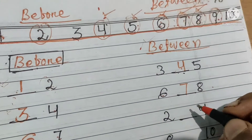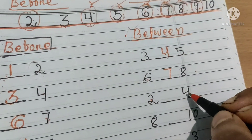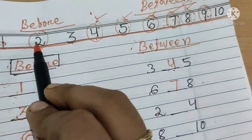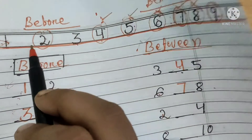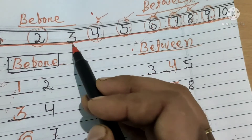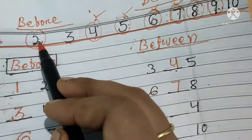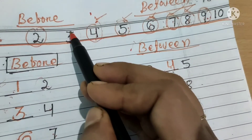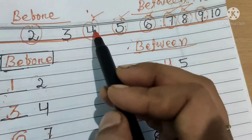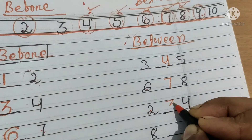Yeh bahut simple hai. Abhi aya number two and four. What comes between number two and four? Number line mein dekho, number two and four ke beech mein konsa number aata hai? Number three aata hai. What comes between number two and four? Number three comes between number two and four. Haam kya likhenge? Number three likhenge.